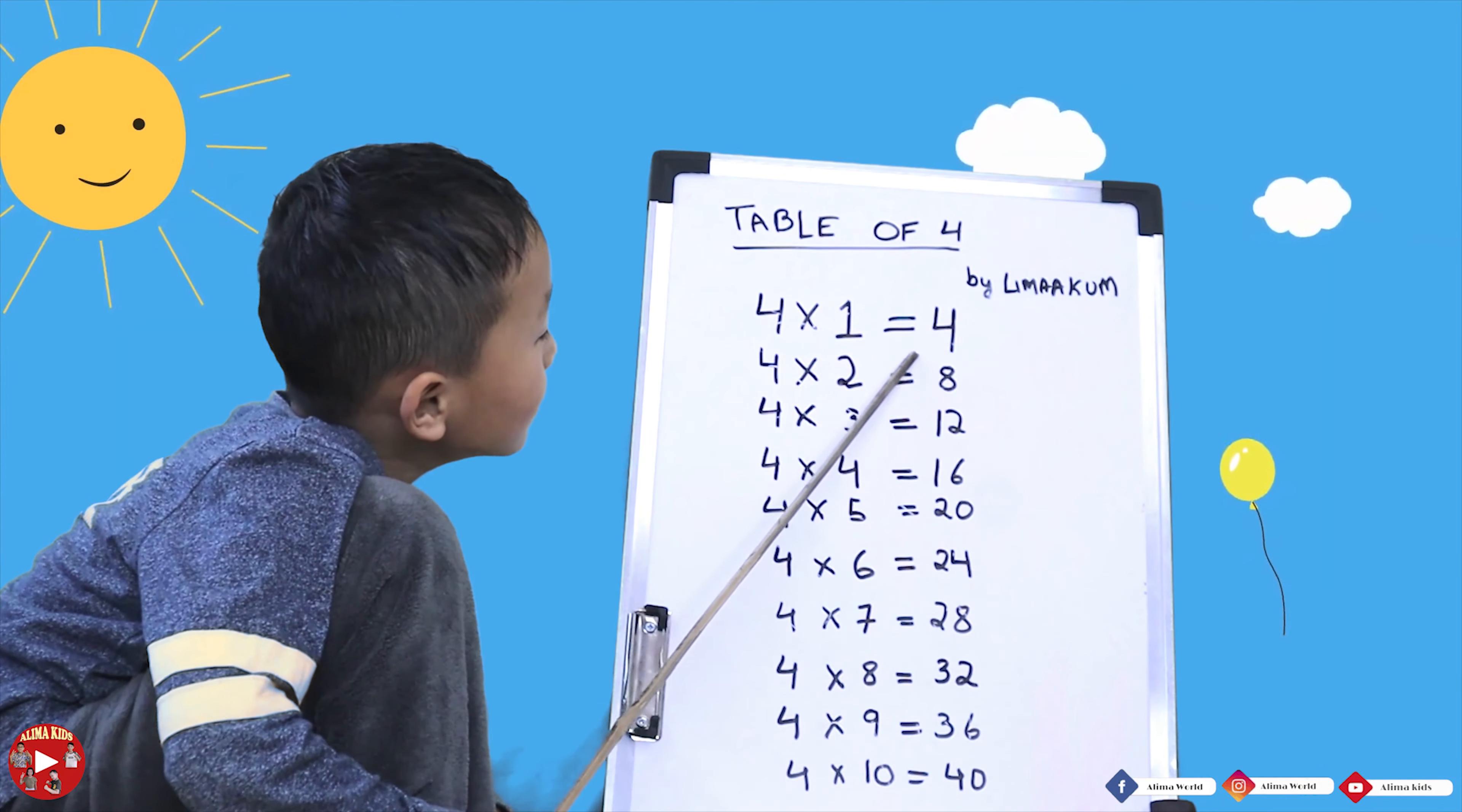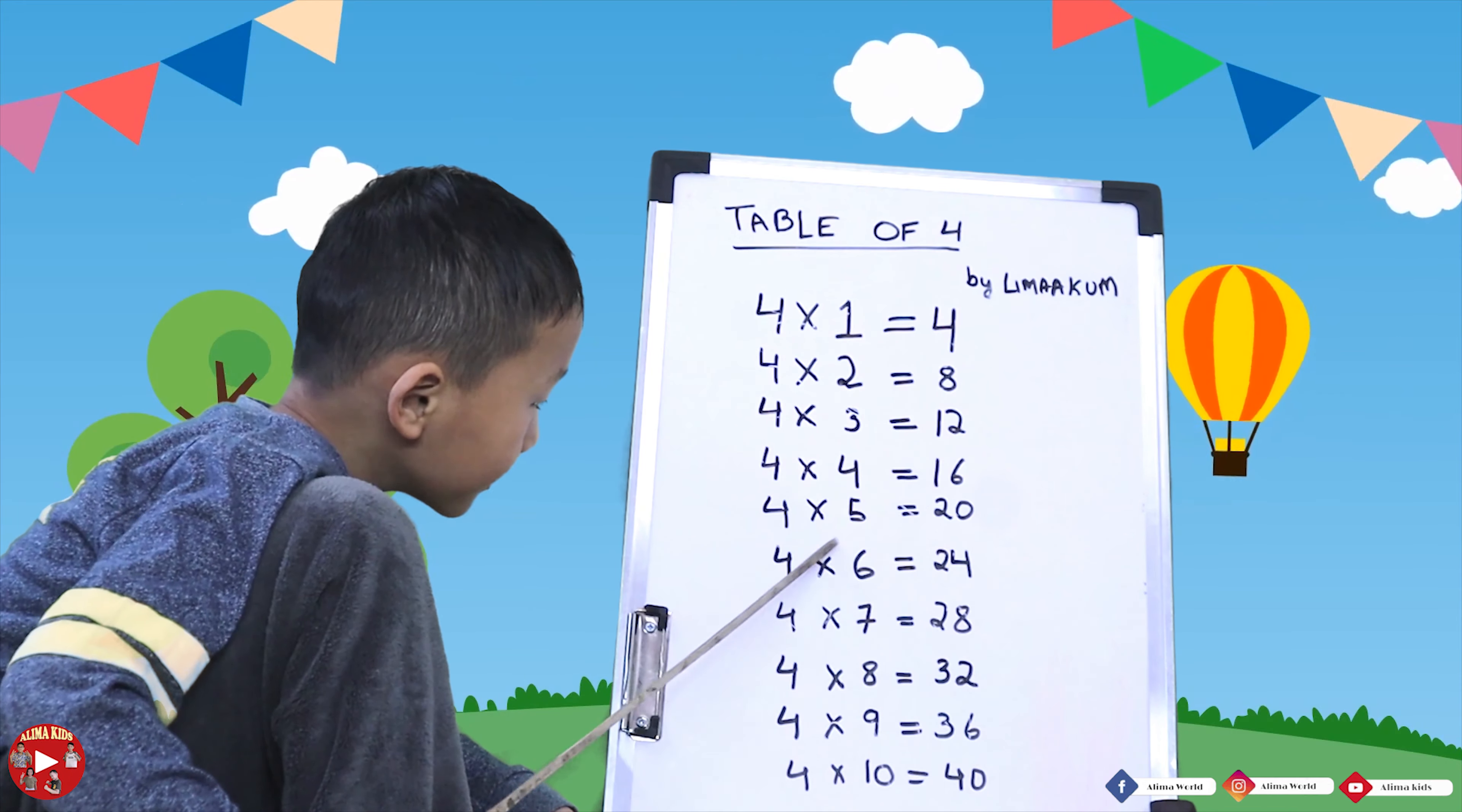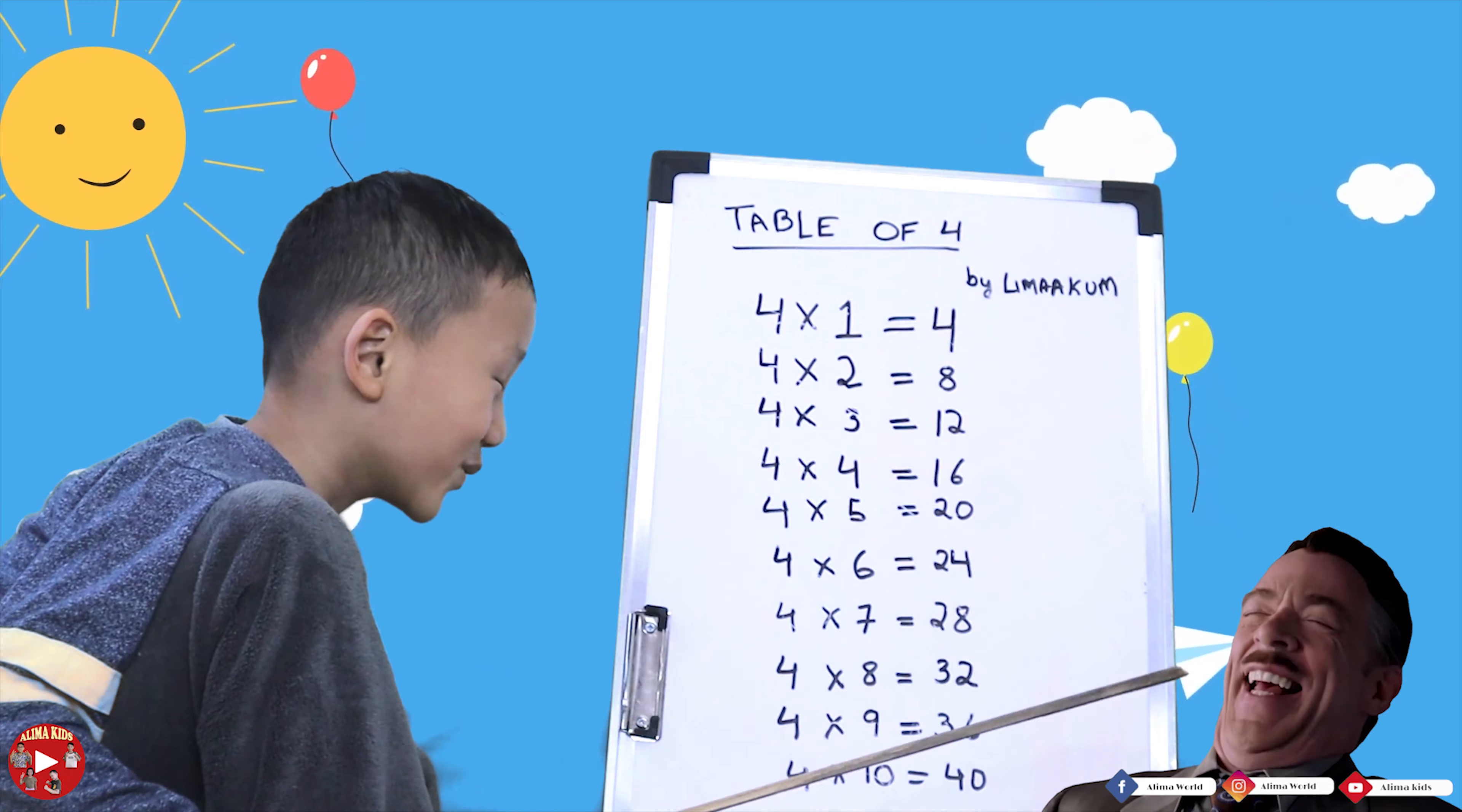Four ones are four. Four twos are eight. Four eights are twelve. Four fours are sixteen. Four five are twenty. Four six are thirty-four. Four seven are twenty-eight. Four eight are thirty-two. Four nine are thirty-six. Four ten are fourteen and then now I do the other thing.